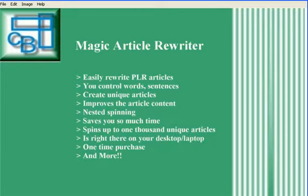The other thing it has is nested spinning. Nested spinning is where you spin a sentence, then you can take that sentence and spin words within that sentence, and it all just saves you so much time. Magic Article Rewriter will spin up to 1,000 unique articles at a time all in one folder for you, giving you a lot of choice. It's also a one-time purchase — not a monthly membership — and you don't have to rely on somebody else's server because it sits right there on your desktop or laptop. There are a lot of other features and I'll show you those now.